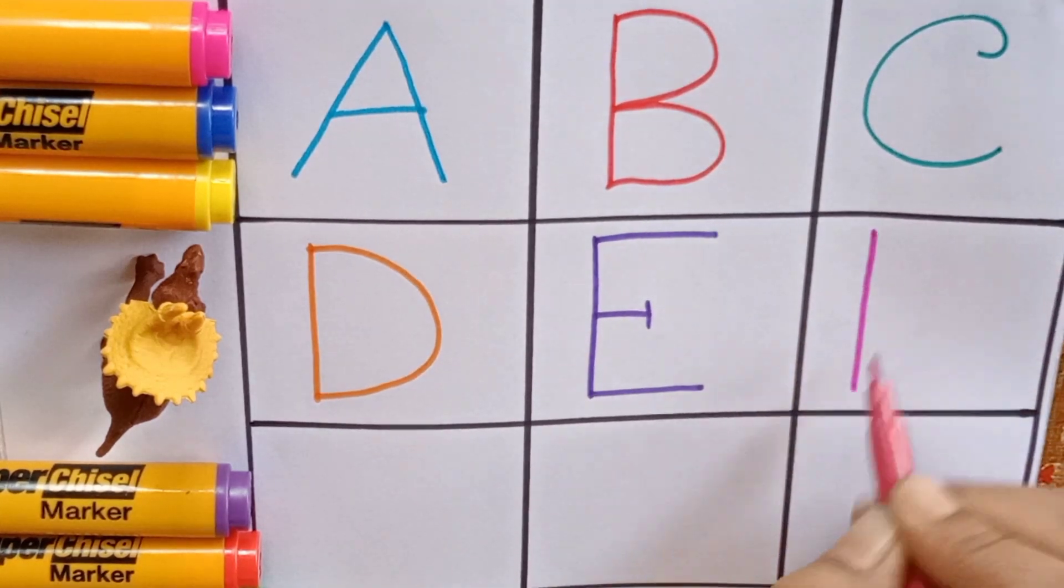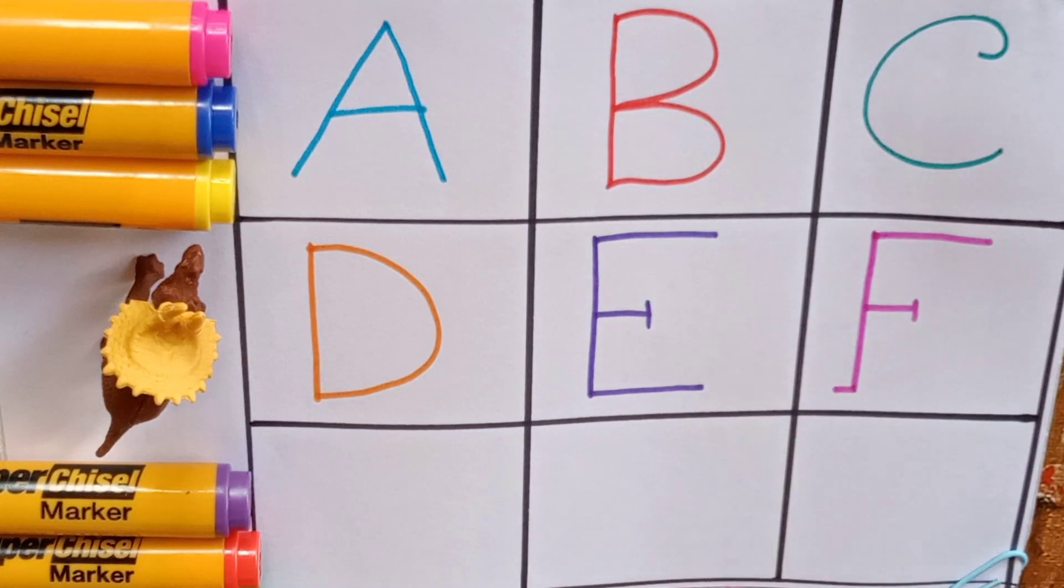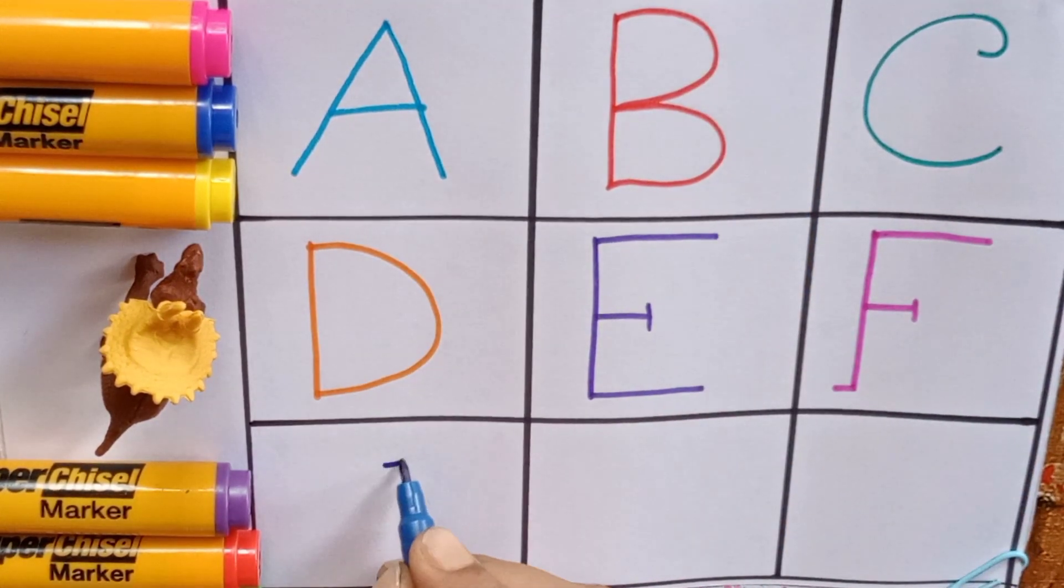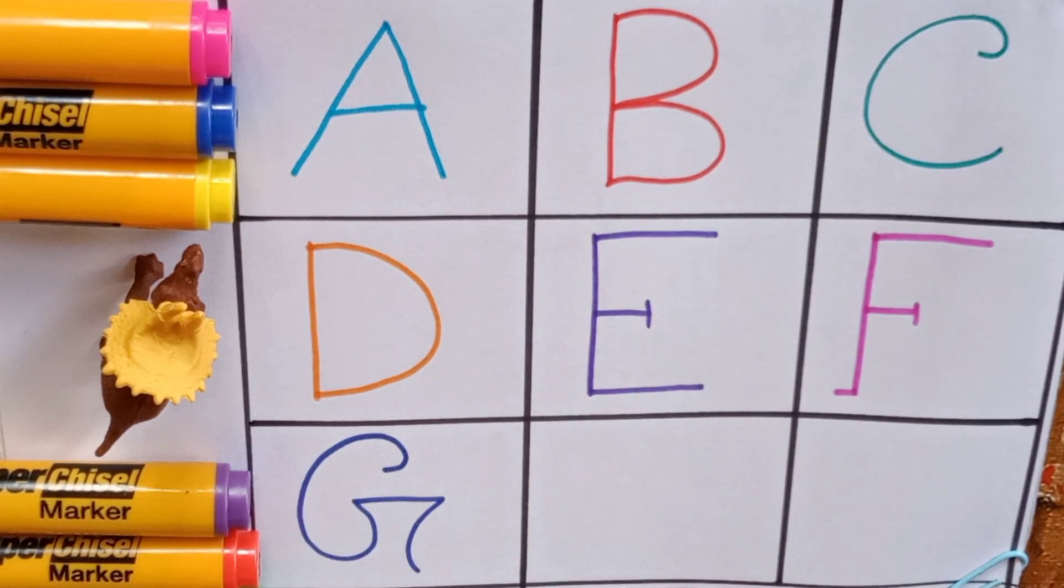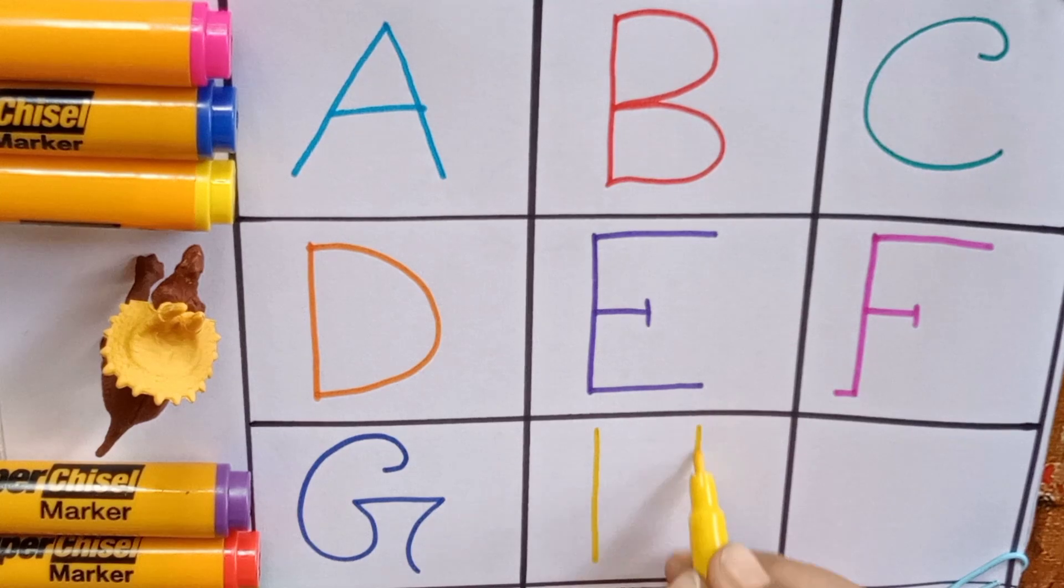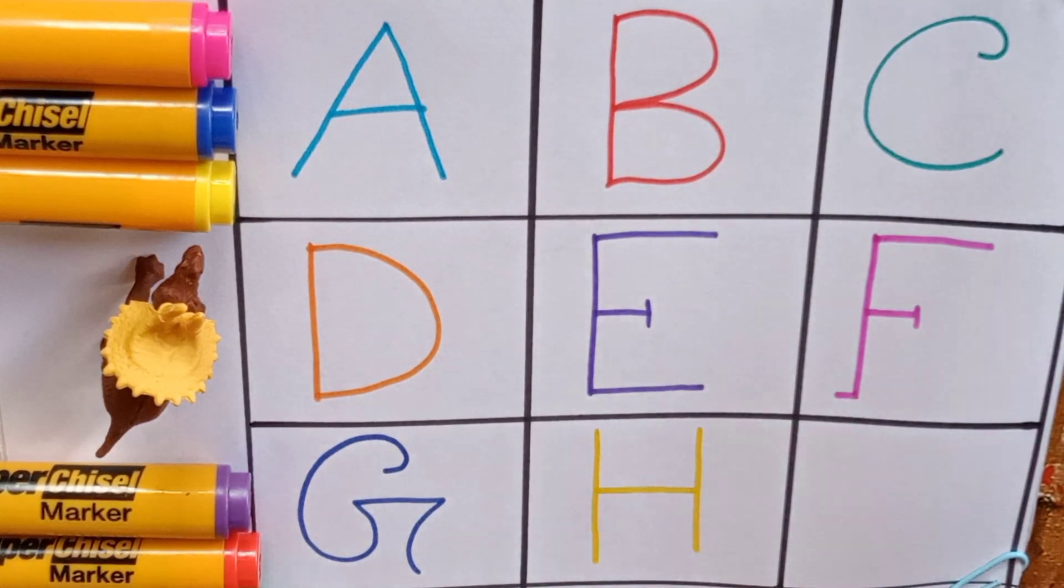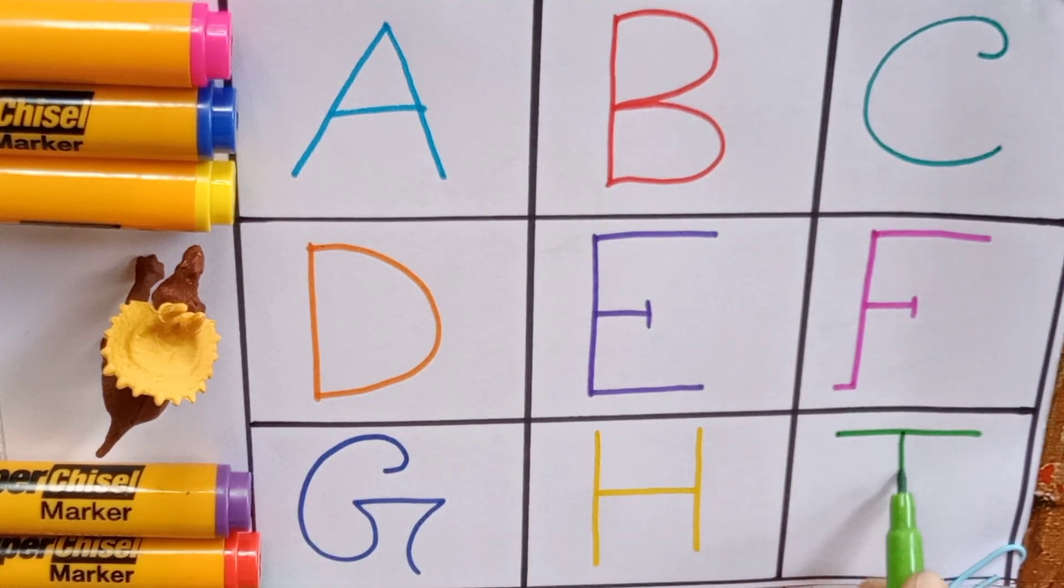F, F for falcon, F for fish. G, G for grapes, G for also game. Yellow: H, H for hippo, H for also hen. Light green: I, I for ice cream, I for also ink pot.